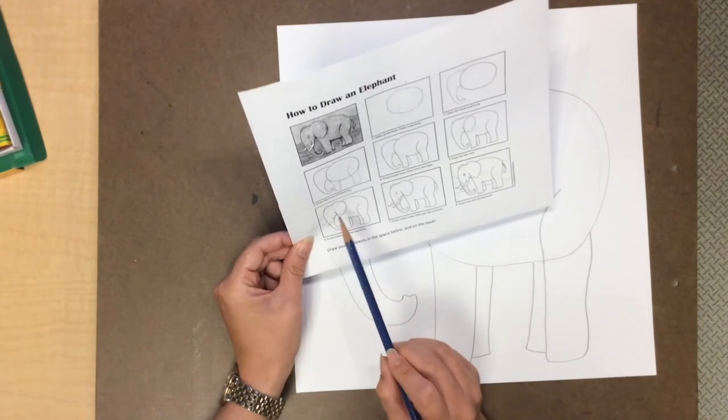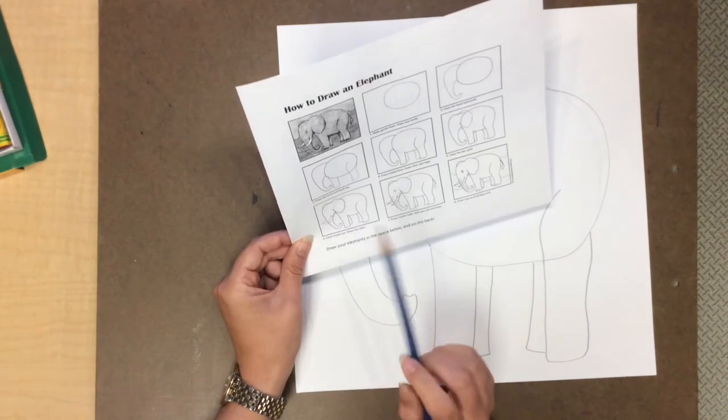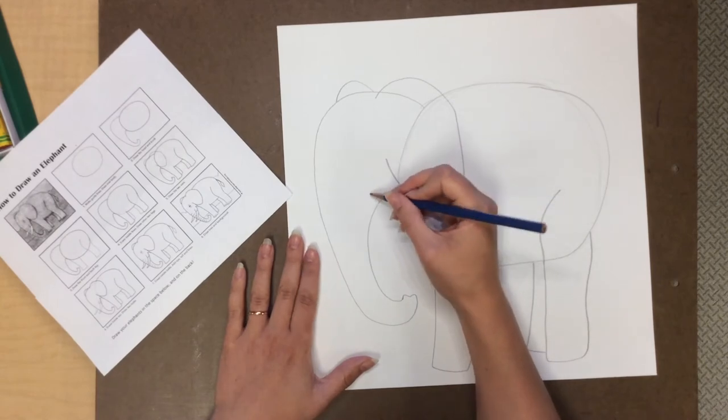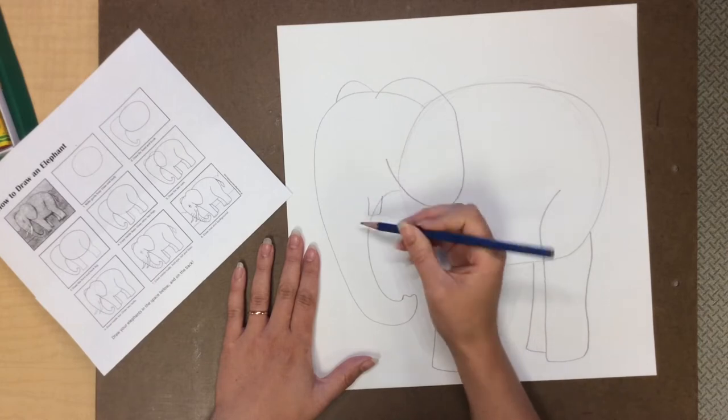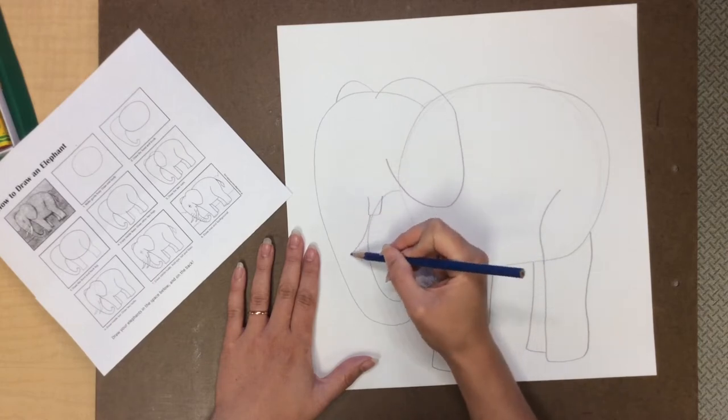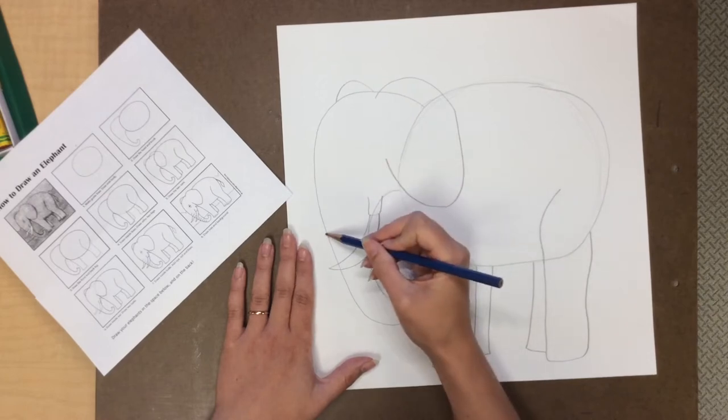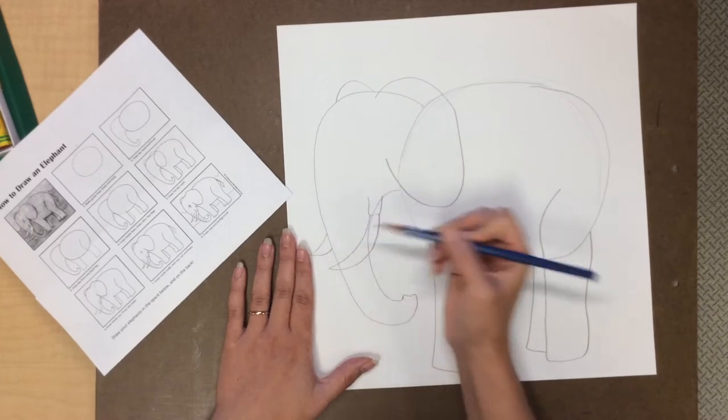Now the next step is we are going to be drawing the elephant tusk. So that is at the top of his trunk. And there's some more curved lines. I'm just gonna try to copy the picture the best I can. It doesn't look just like the picture. That's okay. I'm not gonna worry about it that much.